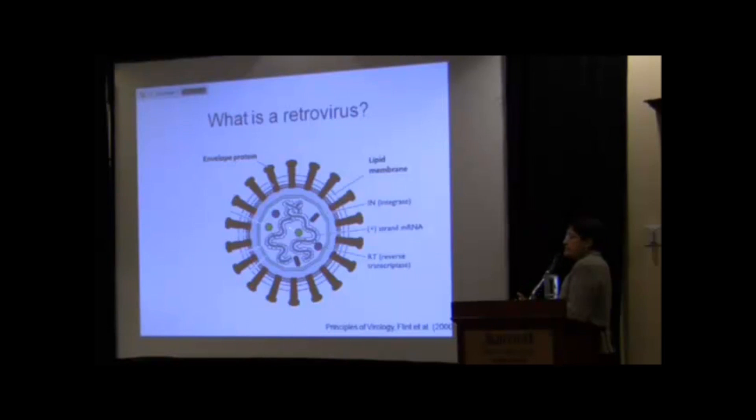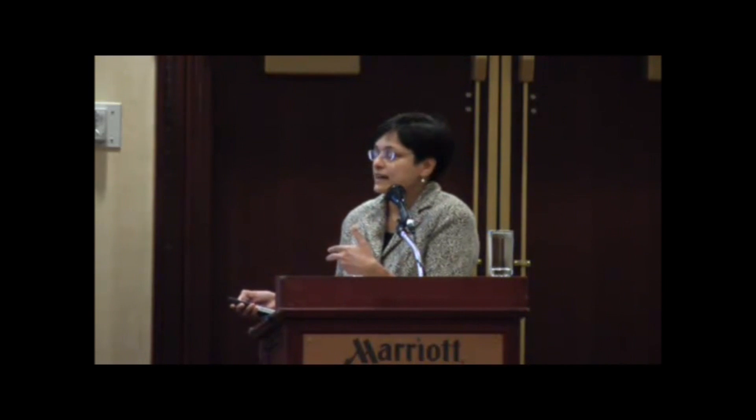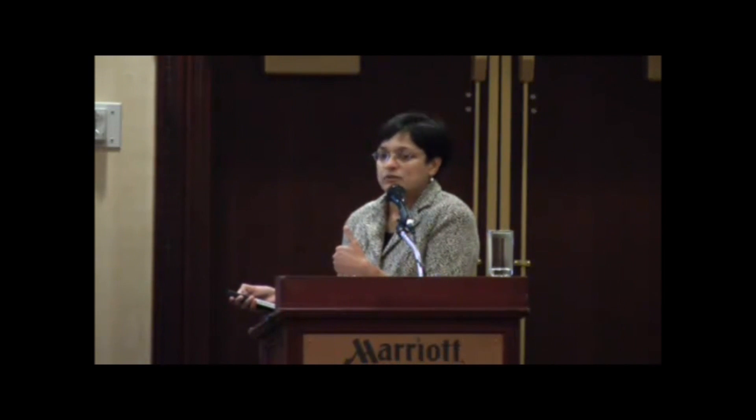Retroviruses then do something else: they take this DNA and, using an enzyme called integrase, insert it into the host genome. So once a cell is infected by a retrovirus, that cell and its progeny forever will contain a DNA version of that retrovirus. This is important for testing, because you can make tests that detect viral RNA, tests that detect the DNA inside the cell, and tests that detect viral proteins.